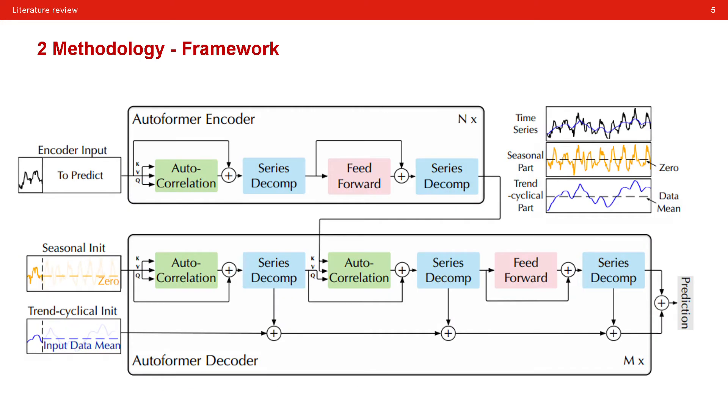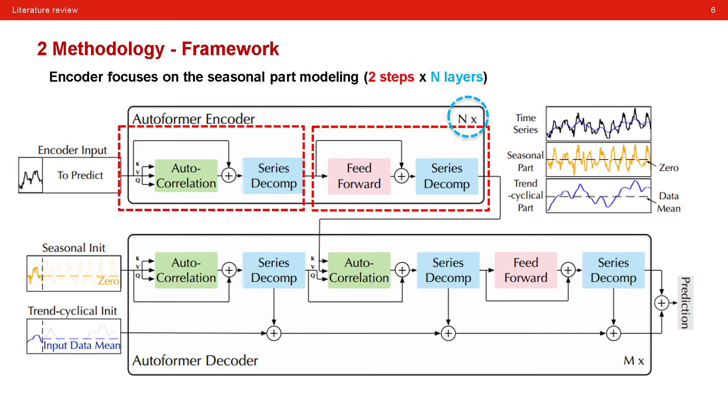Now let me introduce the detail of their methodology. I would like to introduce this part from macroscopic view to microscopic view. At first, we can see that they also utilized the classic transformer framework, the encoder-decoder architecture. For the encoder part, the author designs it specifically for seasonal part modeling for the given time series. In the encoder, it contains N layers in which two steps are processed.